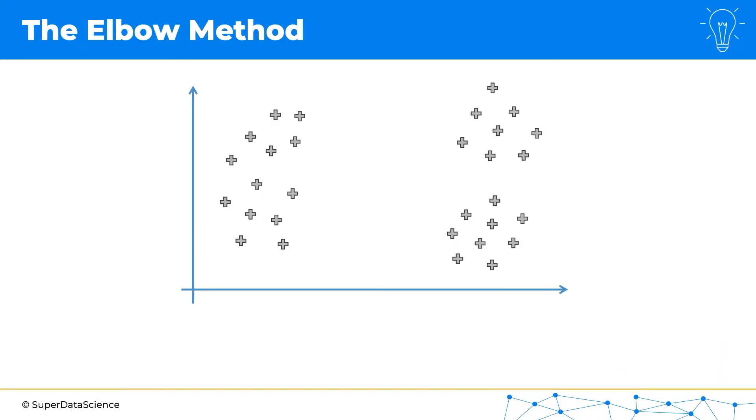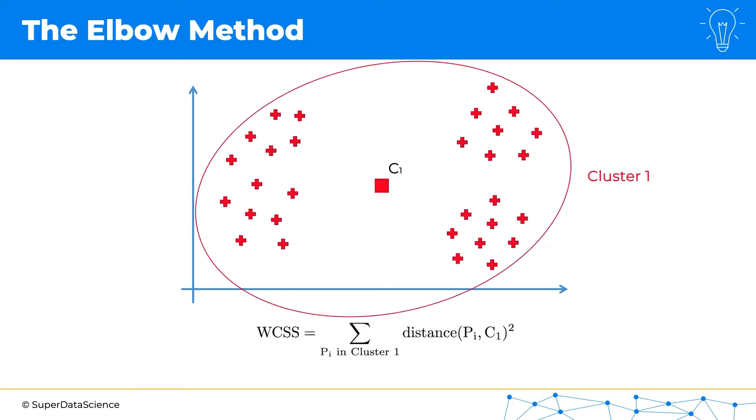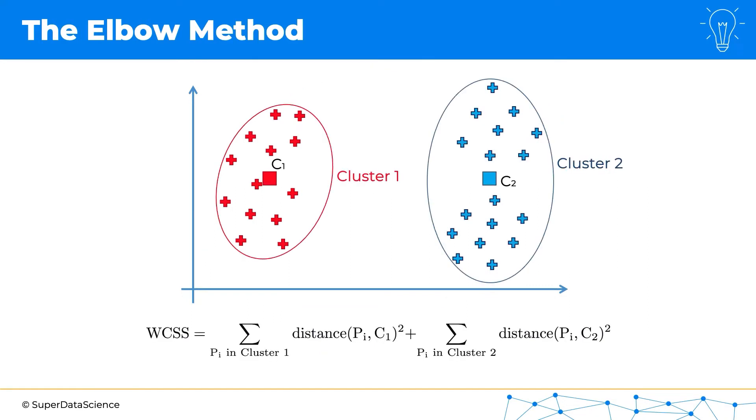If those are data points and we have one cluster, then we just need to measure the distance between each point and that centroid, square it, and add them up. If we have two clusters, then we need to do that for the red points on their own, calculate the distance between each point and centroid, square them, add them up, and then do the same for the blue points and then add them up again.